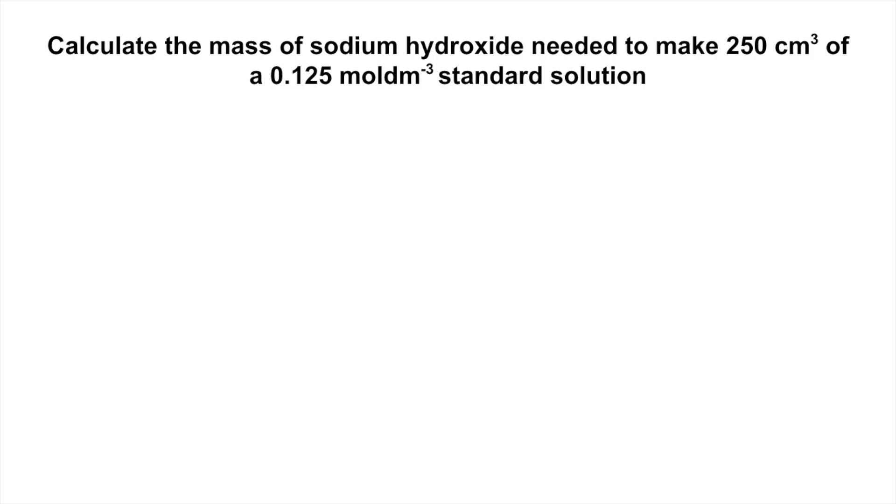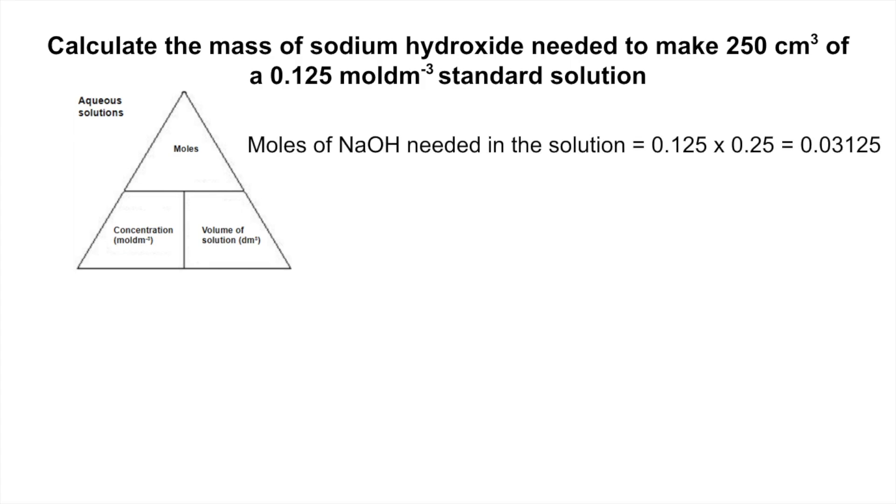Okay, so the first thing I'm going to do is work out how many moles of sodium hydroxide are needed. So moles equals concentration times volume, but remember the volume needs to be in decimeters cubed. So that is 0.03125 moles of sodium hydroxide.